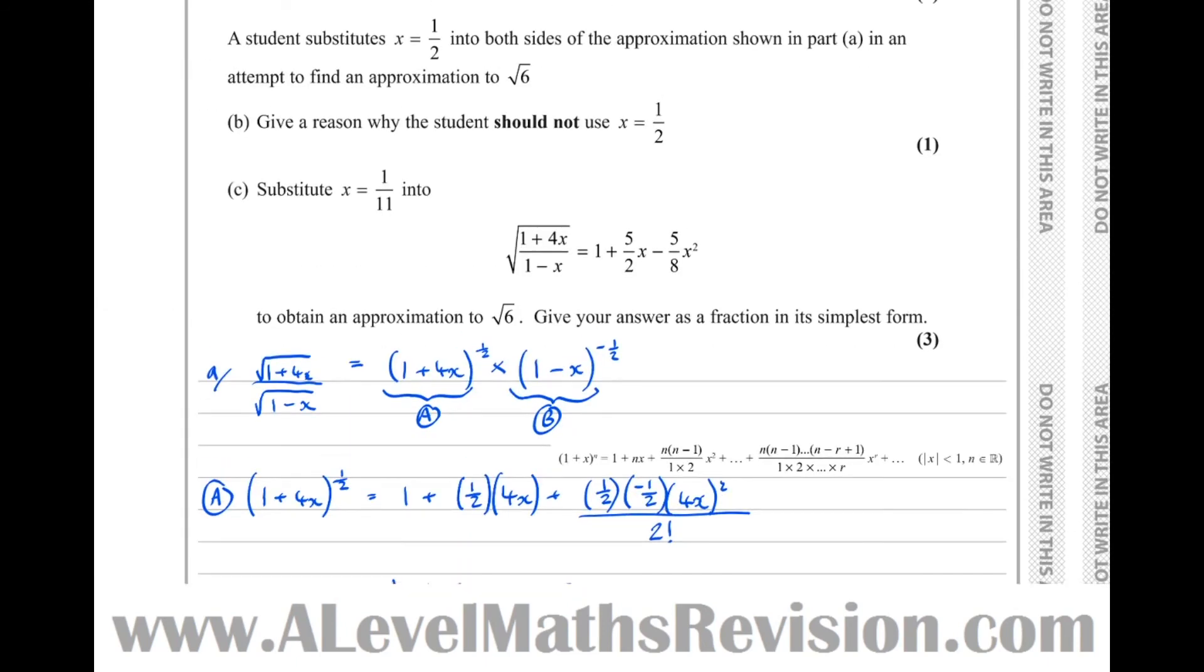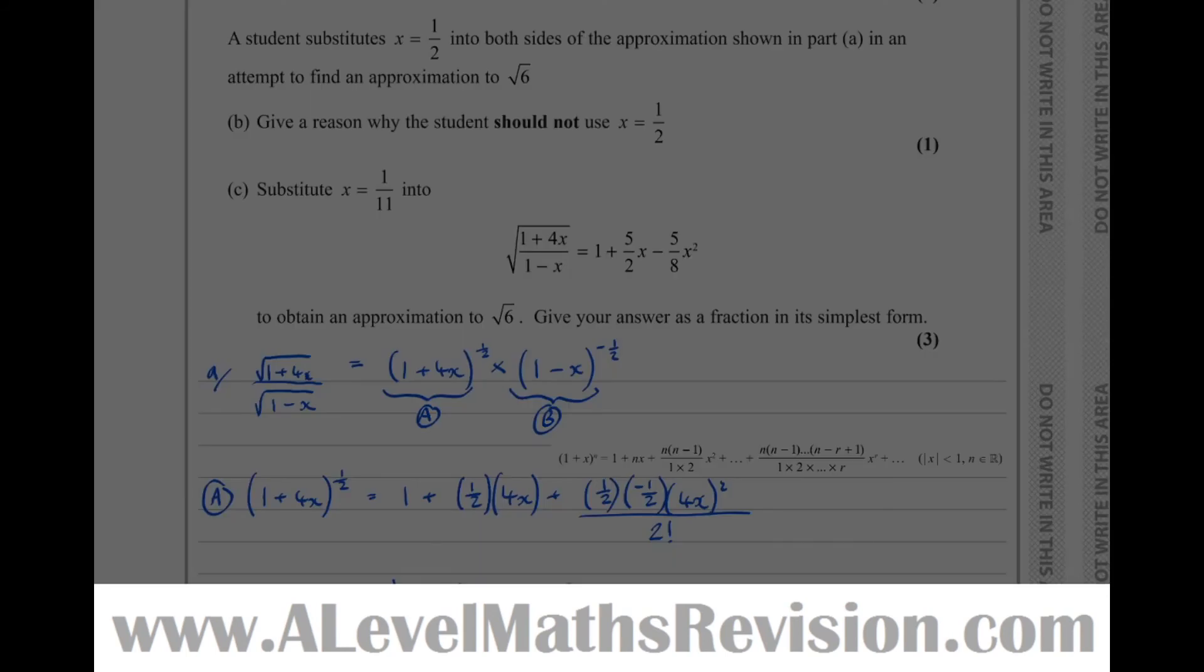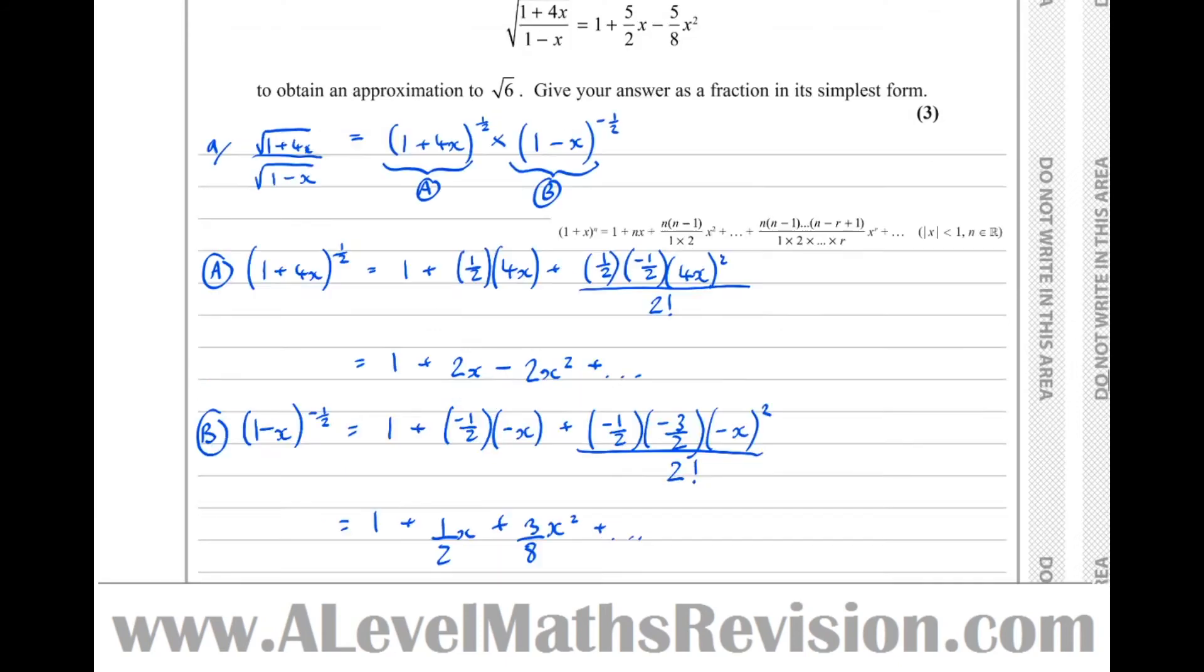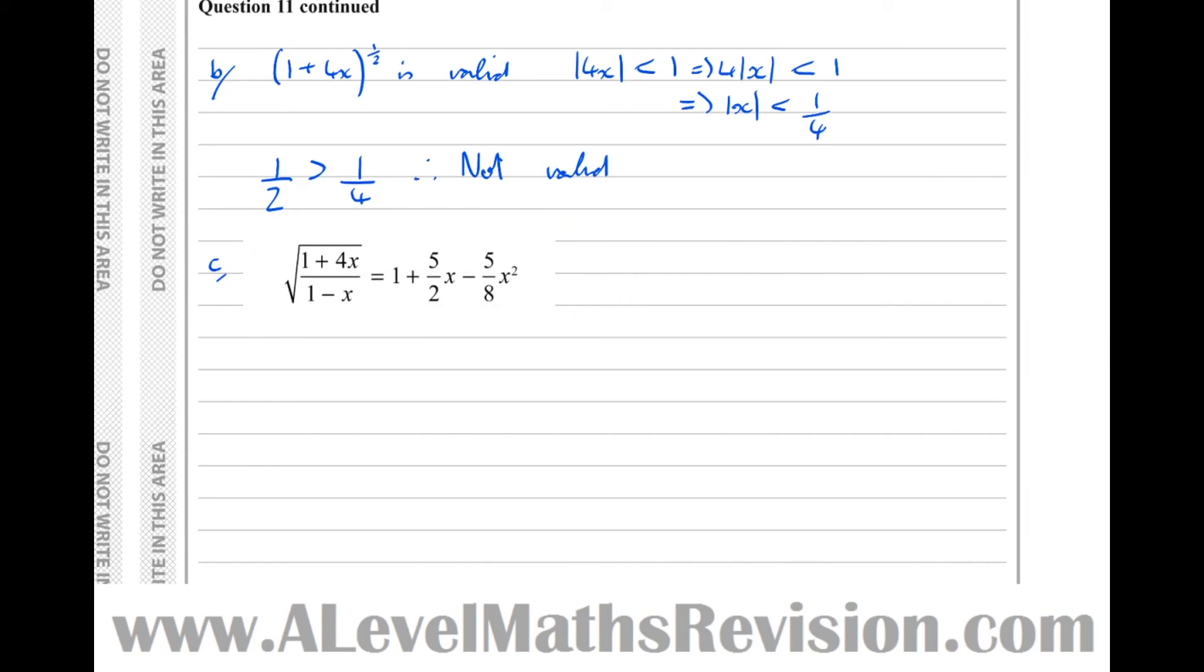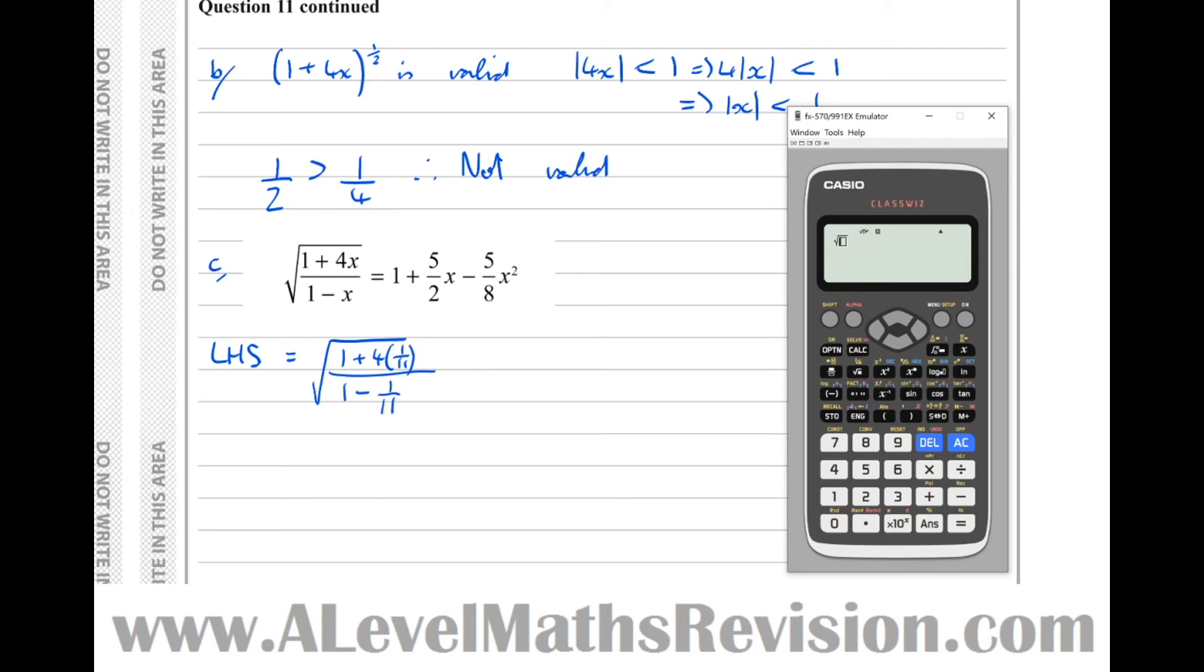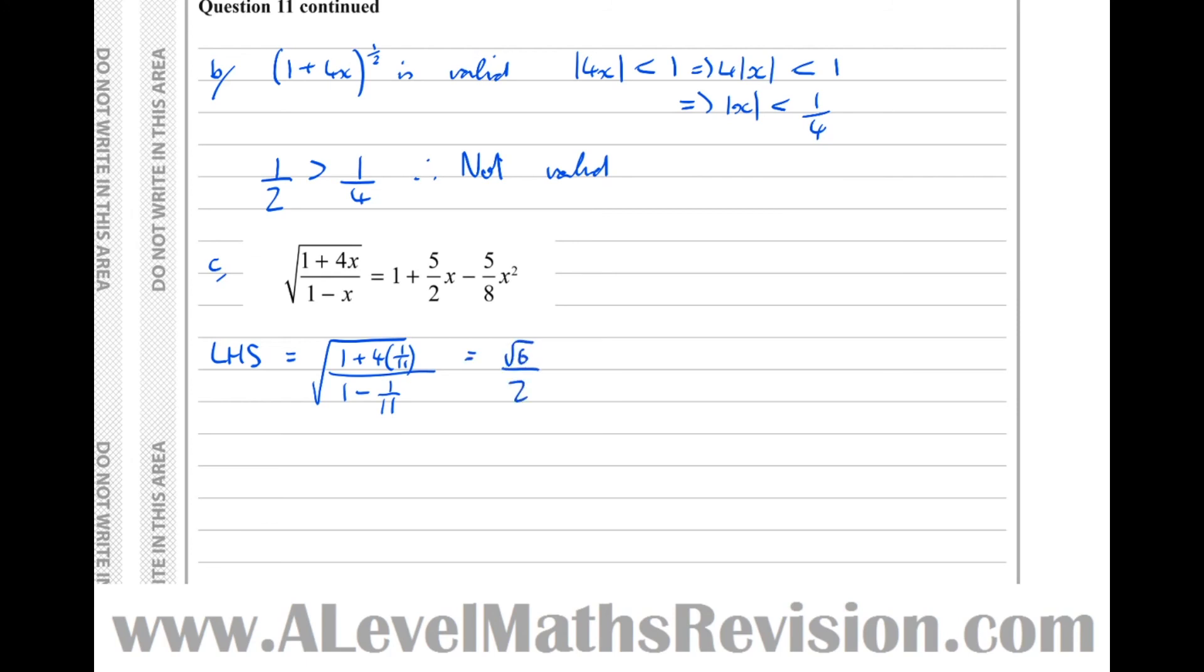Now part C says substitute x equals 1/11 into that to find an approximation to root 6. So let's copy that down. So x equals 1/11. Well on this one, the left hand side equals square root of 1 plus 4 lots of 1/11 over 1 minus 1/11. So let's type that in the calculator. So square root, fraction 1 plus 4 lots of 1/11 over 1 minus 1/11 equals root 6 over 2. And we can see now from the question where our root 6 comes from.